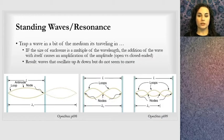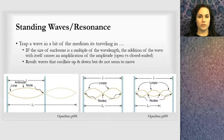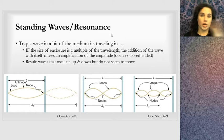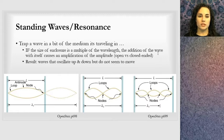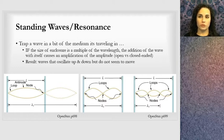Let's look more particularly at the wavelength of these waves and how they relate to the nodes and antinodes. This is also what we call resonance — an amplification of waves. Standing waves are a case of resonance where we're trapping a wave in the medium it's traveling in. Because it's trapped, it's going to vibrate back and forth. If the size of the enclosure is a multiple of the wavelength, the addition of the wave with itself causes an amplification of the amplitude.